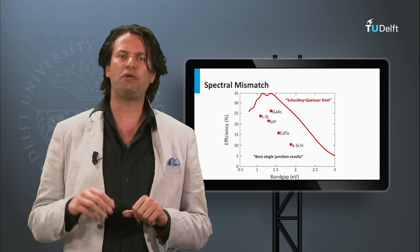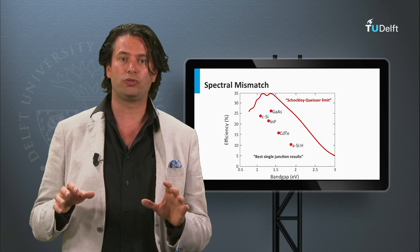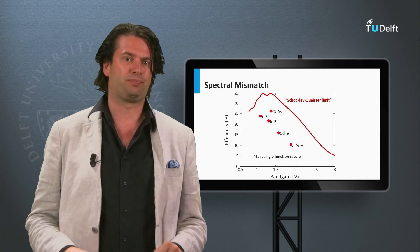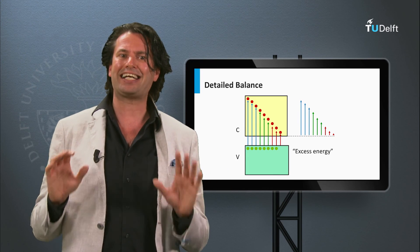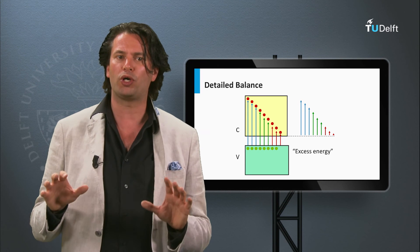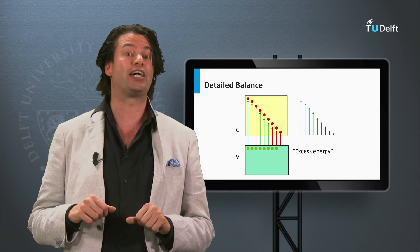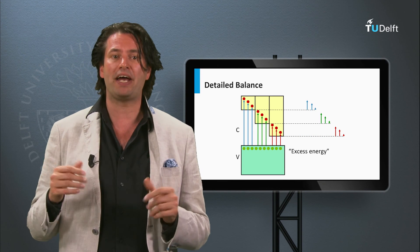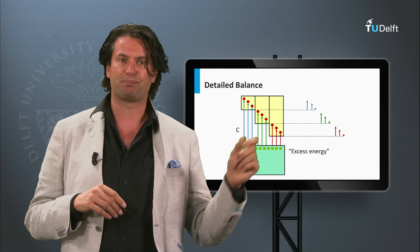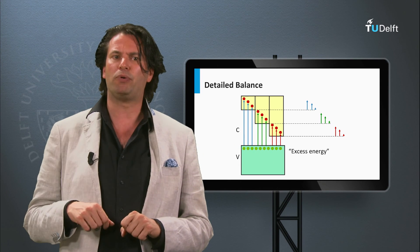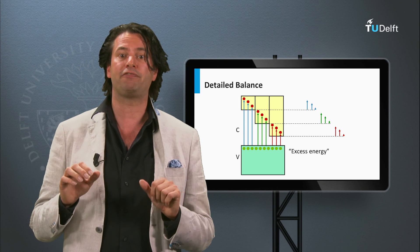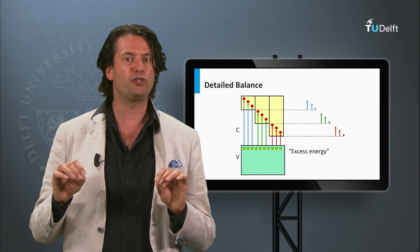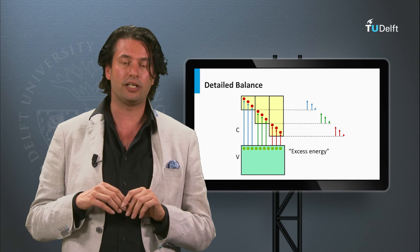Later in this course we will discuss various concepts which might allow us to pass the Shockley-Queisser limit. A way to reduce the amount of excess energy is to use more than one semiconductor material, often referred to as a multi-junction. This allows us to use more than one band gap and the match with the solar spectrum improves. As you can see in this example, the excess energy can be reduced significantly and the spectral utilization improves. We will discuss such multi-junction concepts in greater detail in week 5.